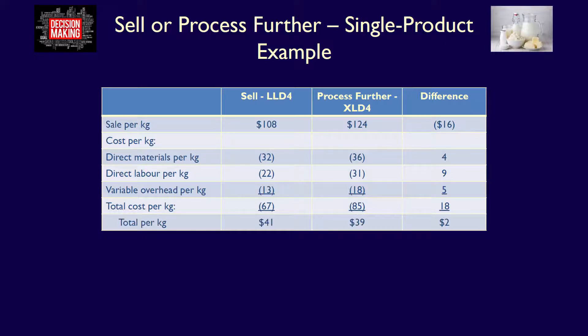Summing each column: sell LLD4 equals $41 (calculated as $108 sales revenue minus $67 total costs); process further into XLD4 equals $39 (calculated as $124 sales revenue minus $85 total costs); and the difference column is positive $2, calculated as $41 minus $39, or equivalently as negative $16 plus $18.